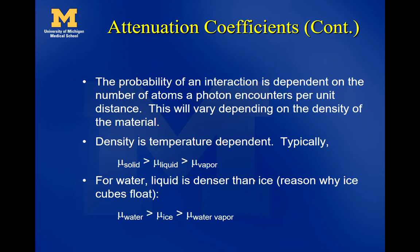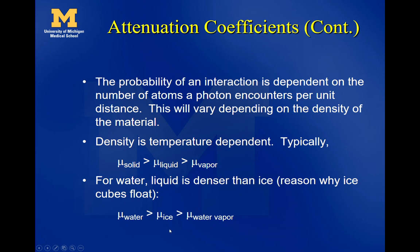The probability of interaction depends on the number of atoms a photon encounters per unit distance, which varies with density. For example, liquid water, solid water (ice), and water vapor are all the same atomic composition but different densities. Water vapor has the lowest density and least attenuation. Interestingly, ice floats on water — meaning ice is less dense than liquid water — so the attenuation of solid ice is actually less than that of liquid water. This is one quirky exception: normally solid is more attenuating than liquid than vapor, but water attenuates more than ice.